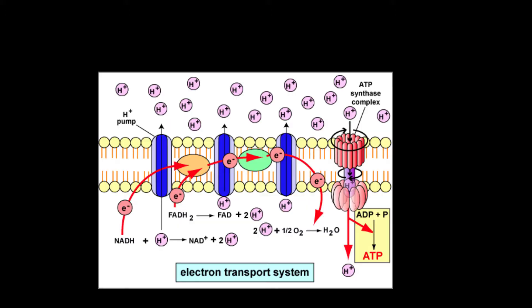The electron transport chain is a collection of molecules embedded in the membrane. Most of the members of the electron transport chain are proteins. NADH transfers its electrons to the first member of the electron transport chain. FADH2 drops its electrons off a little farther down the chain.